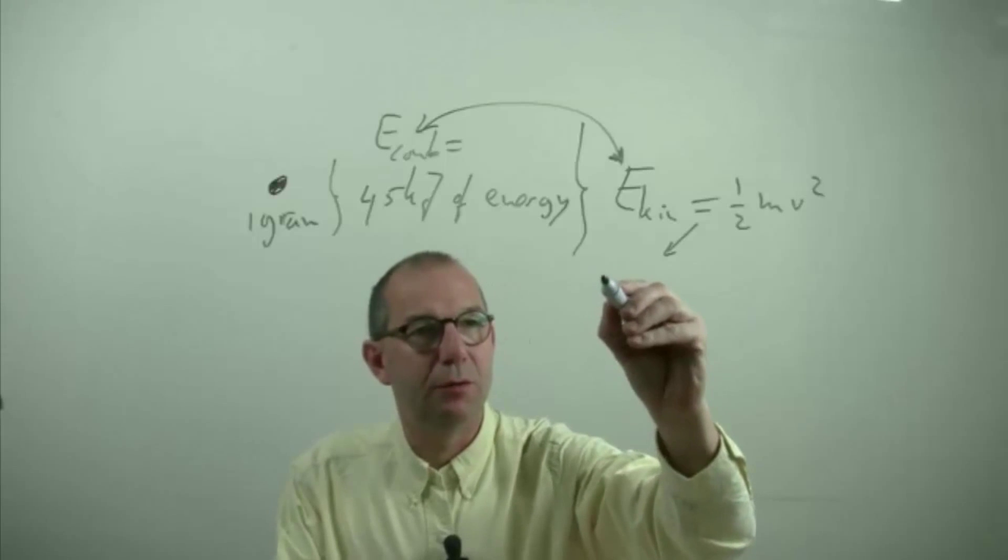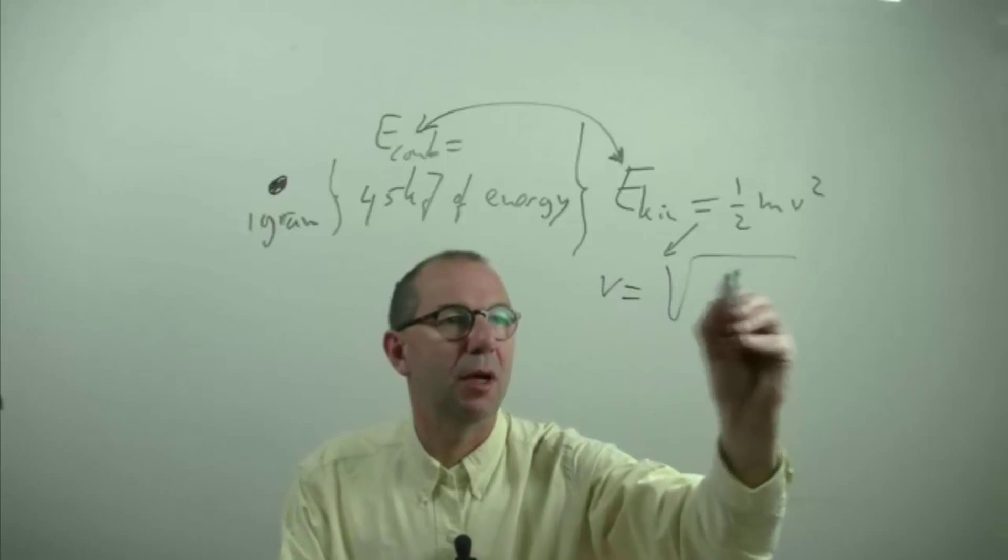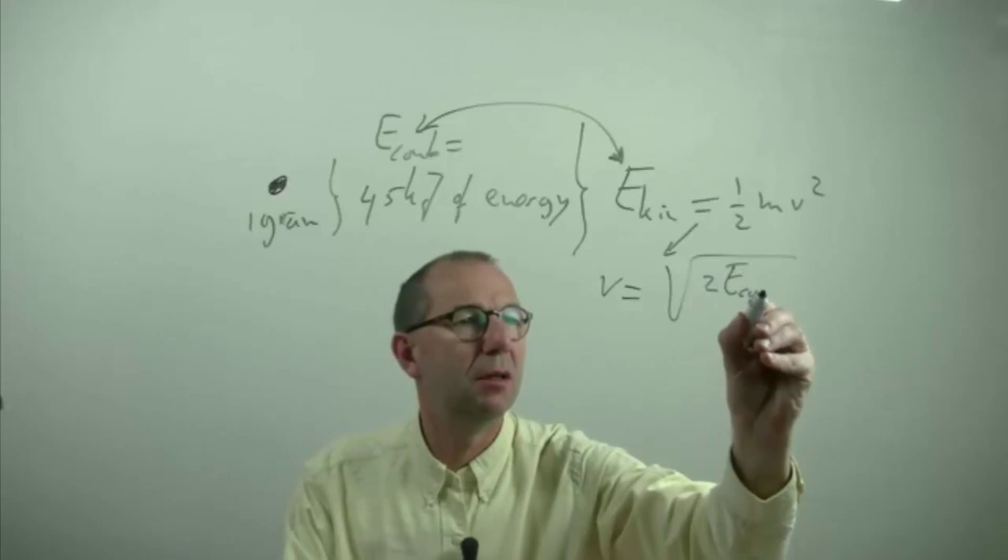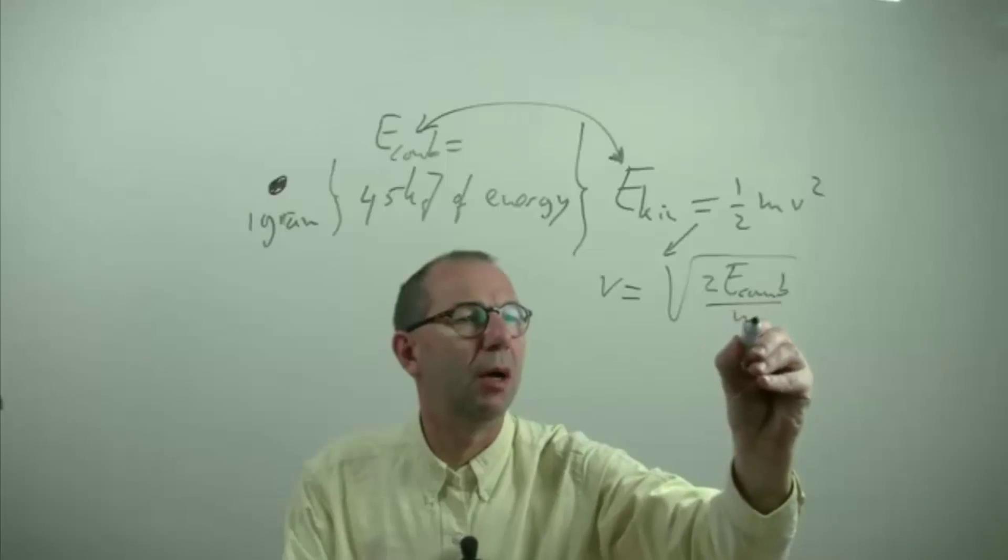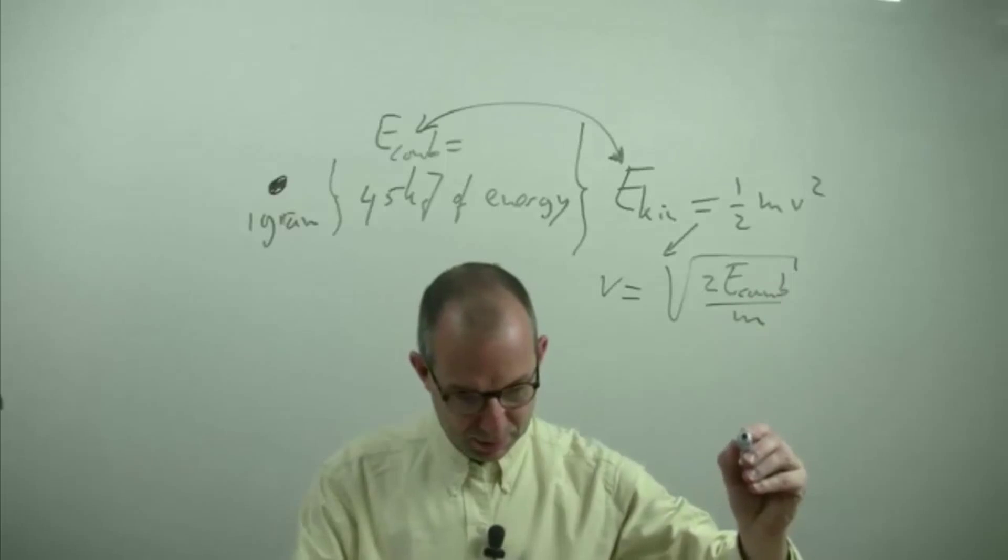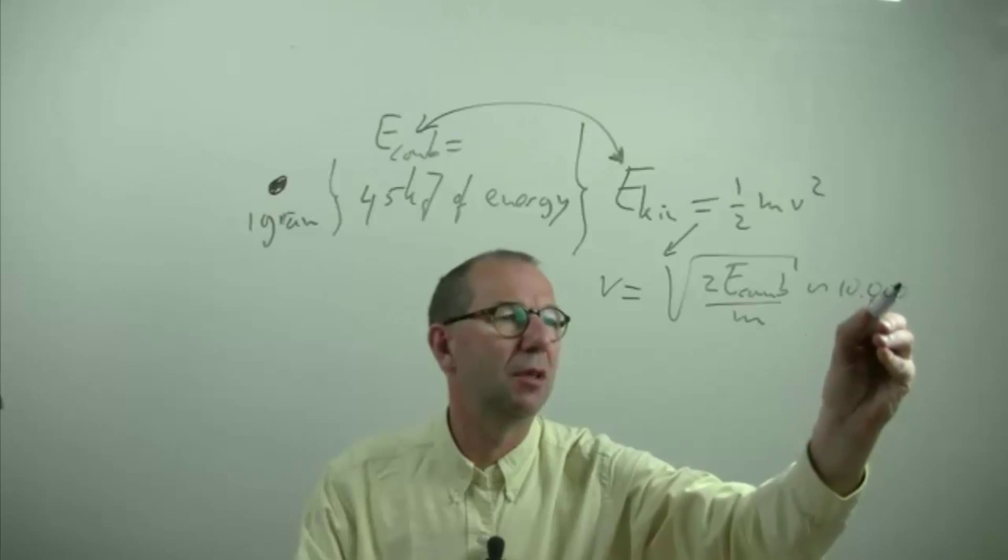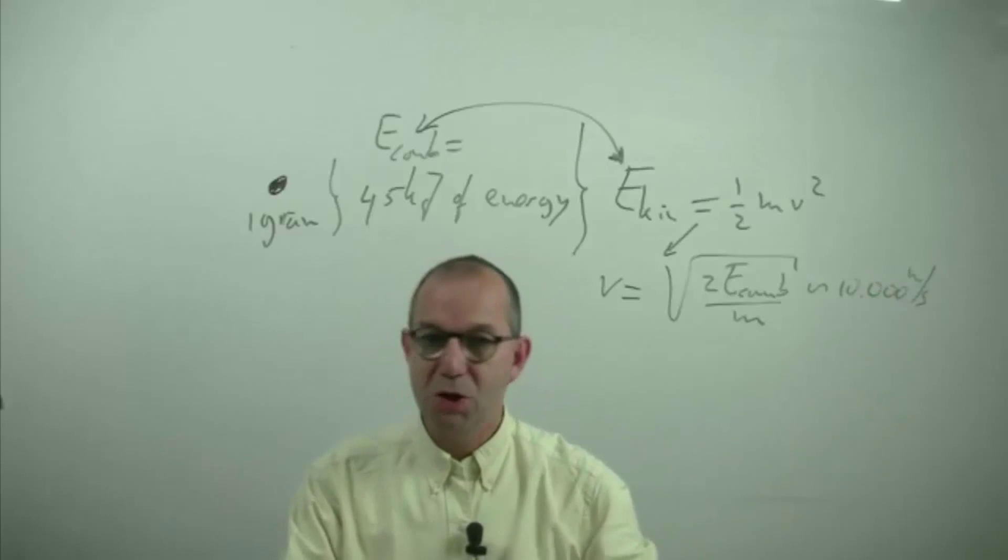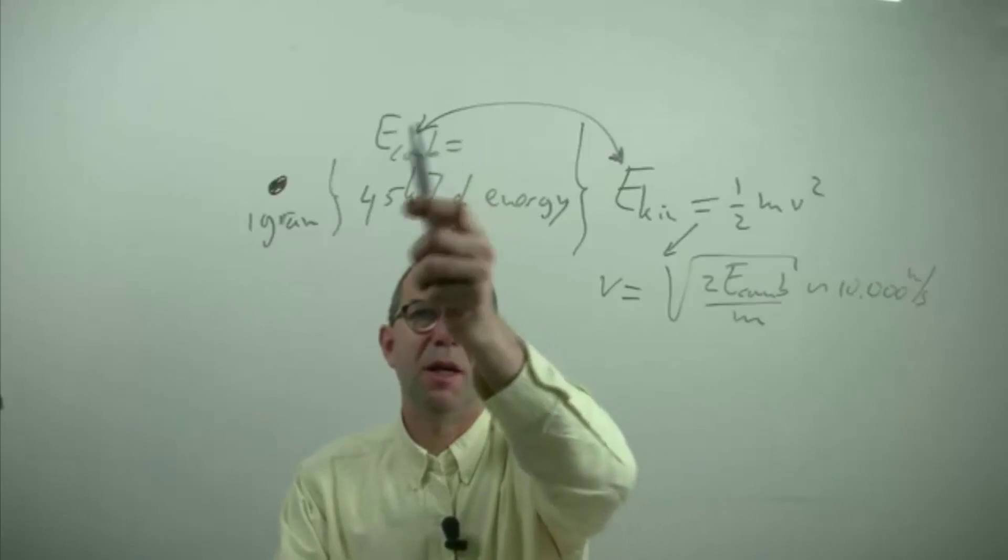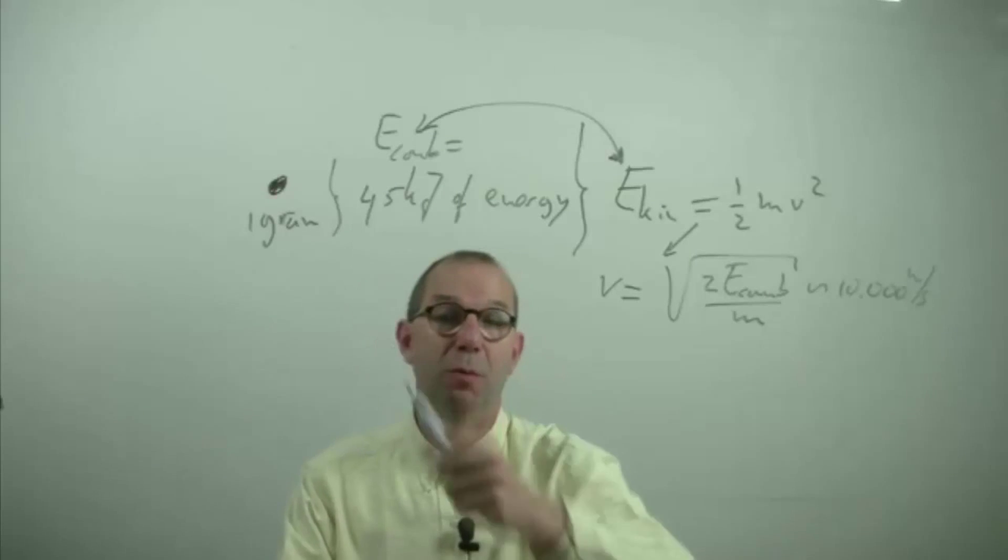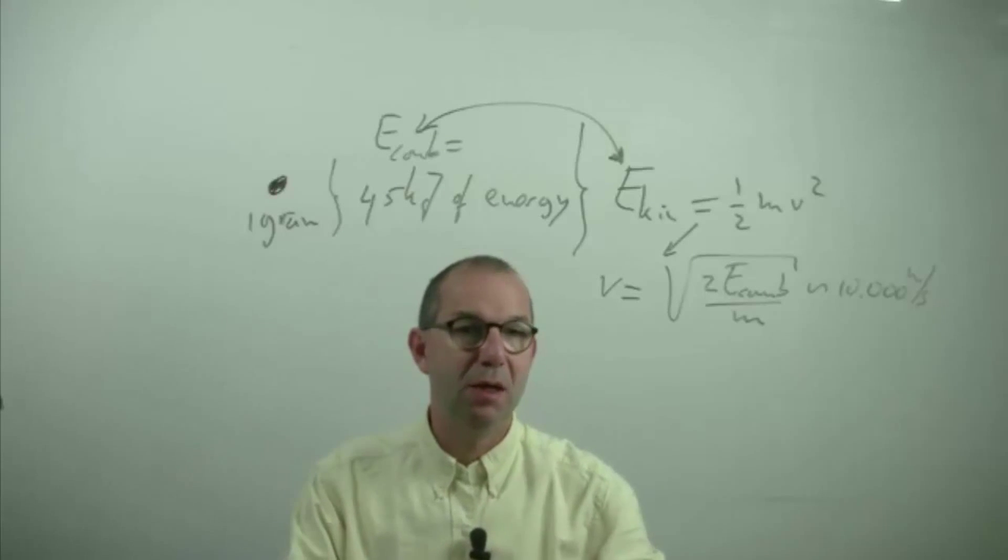Thus I can compute V as the square root of 2 times the combustion energy over the mass of the particle. And that is a staggering 10,000 meters per second, showing that chemical energy stored in ordinary material, like a drop of petrol, is enormous.